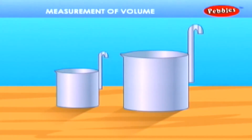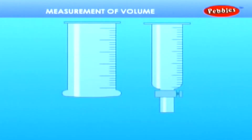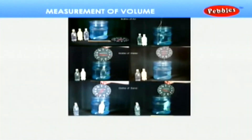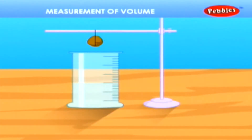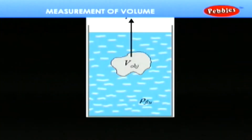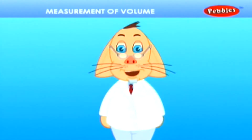Hence, 1 cm³ is equal to 1 millilitre. In the laboratory, we measure volume by using the measuring cylinder, the burette, and the pipette. A measuring cylinder can also be used to measure the volume of a solid. Take water in a measuring cylinder and note its initial level. Now gently lower a stone into the water. The water level rises. Note the new level of water. The difference between the two levels gives the volume of the stone.